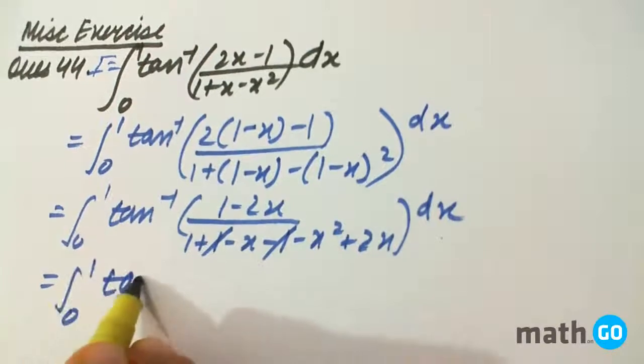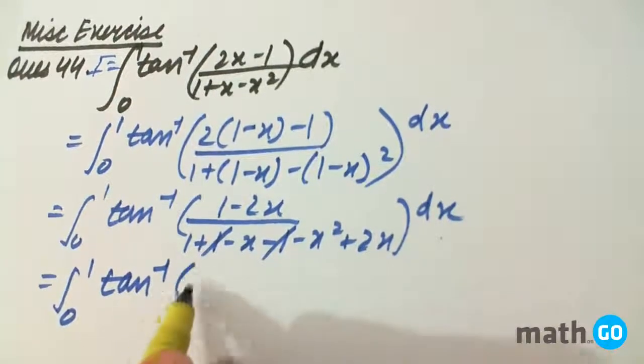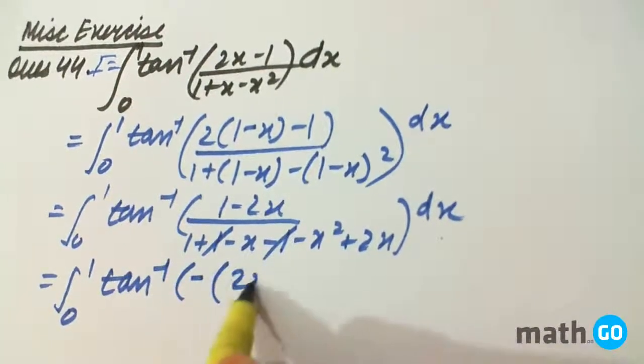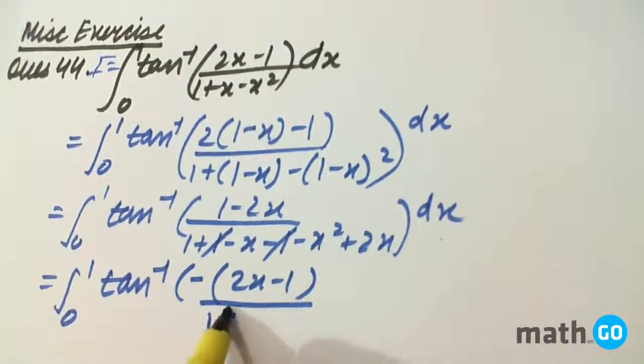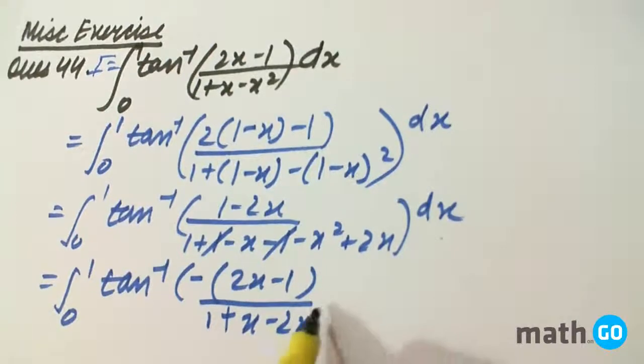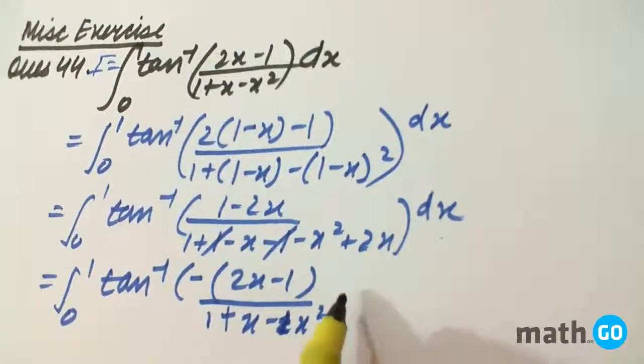So it is 0 to 1 tan inverse minus of (2x-1)/(1+x-x²) dx.